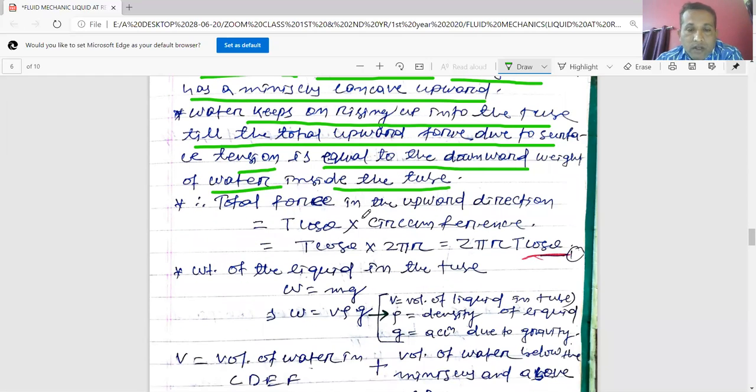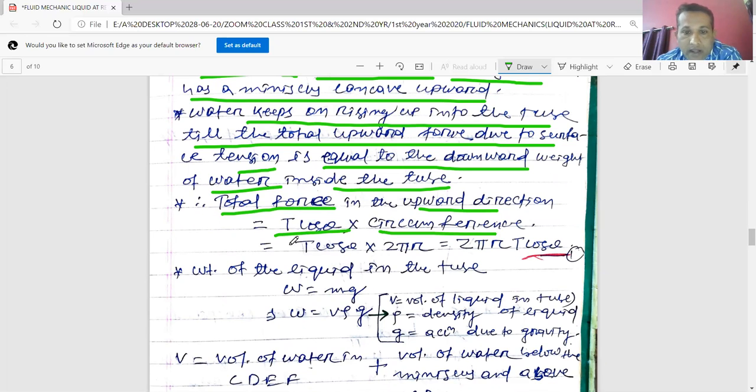So let us find out the total upward force. Total force in the upward direction is nothing but T cos θ into circumference, which is T cos θ into 2πr, or 2πrT cos θ. Let it be equation 1.